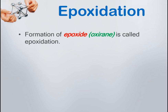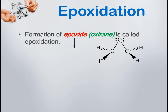The next reaction is epoxidation — formation of an epoxide, also called oxirane. An epoxide is a compound where an oxygen bridges two adjacent carbon atoms, forming a three-membered cyclic ring. When the double bond of ethene is broken, a bridging oxygen attaches to both carbons. Recalling the functional group ether — oxygen in the center attached to two alkyl groups — an epoxide is essentially a three-membered cyclic ether.